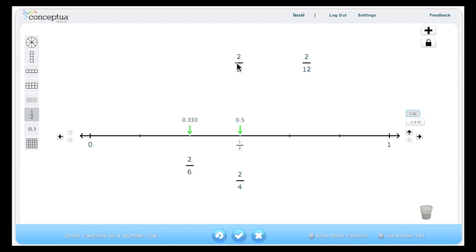2 eighths may take a little more thought. Well, I know that 8 eighths is 1 whole. 4 eighths is 1 half. So if I take half of that, I'll place it perhaps around here.